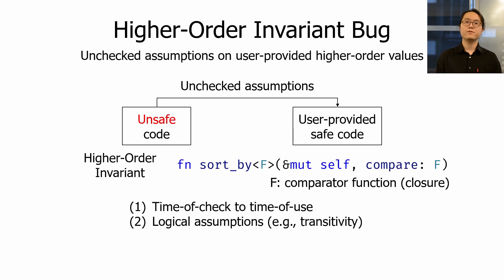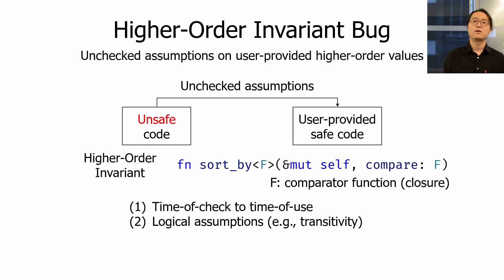Higher-order invariant bugs are difficult because the assumptions internal unsafe code makes on user-provided logic are implicit. Common examples include assuming a function call always returns the same value — leading to time-of-check to time-of-use bugs — or unverified semantic assumptions, such as assuming a comparator satisfies transitivity or associativity.